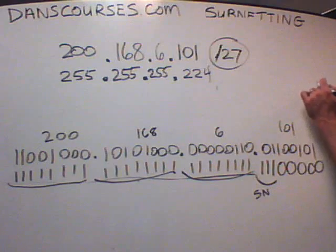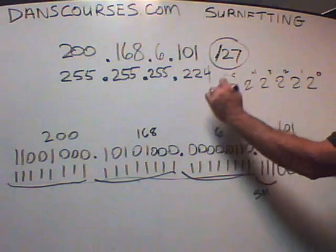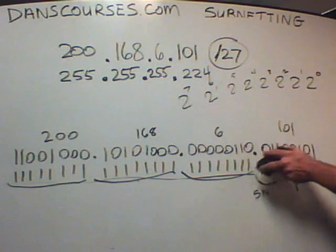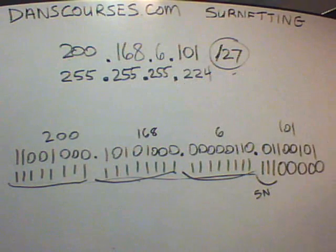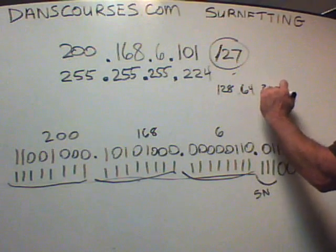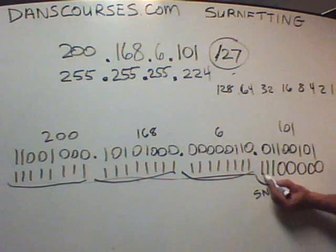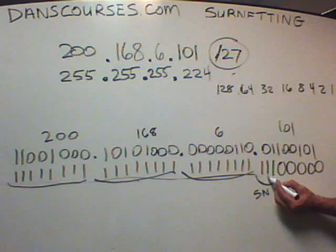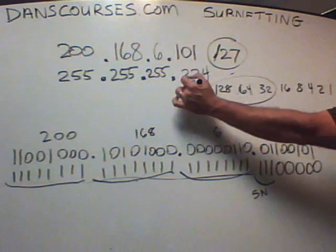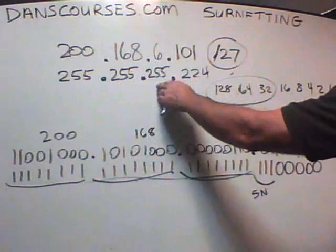That adds up to 224 because in an 8-bit number system, each bit has a place value: 2 to the 0, 2 to the 1, up through 2 to the 7th power. The place values are 128, 64, 32, 16, 8, 4, 2, 1. This is the 128-bit, this is the 64-bit, this is the 32-bit. If you add 128 + 64 + 32 together, you get 224 — that's why we have 255.255.255.224.